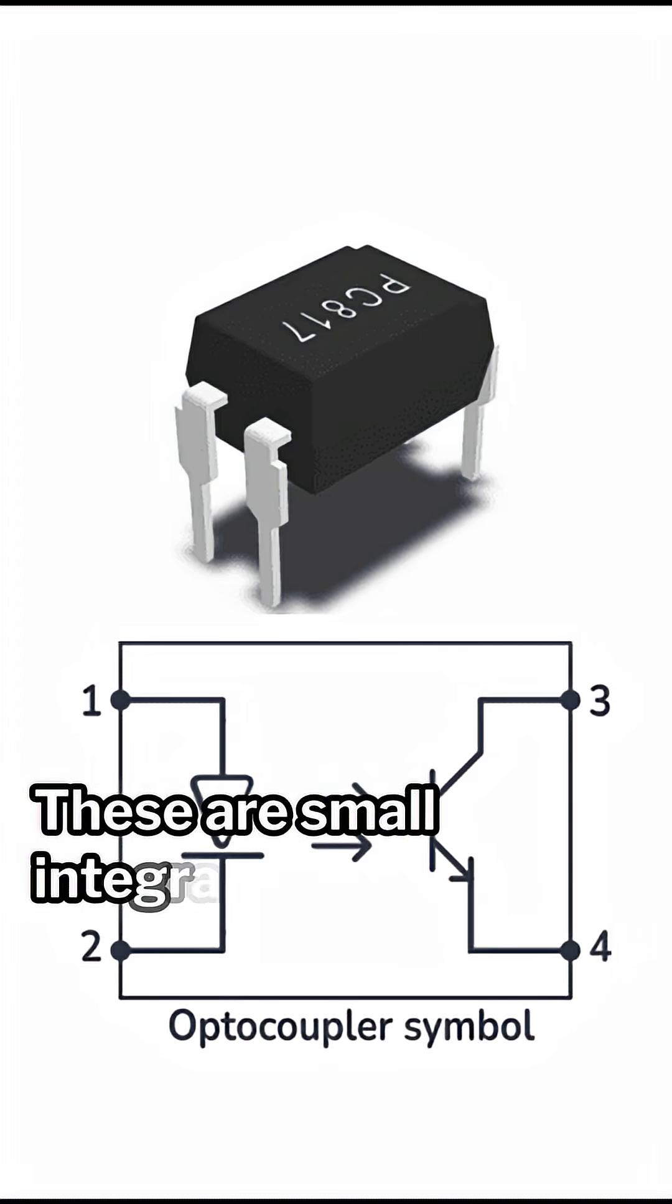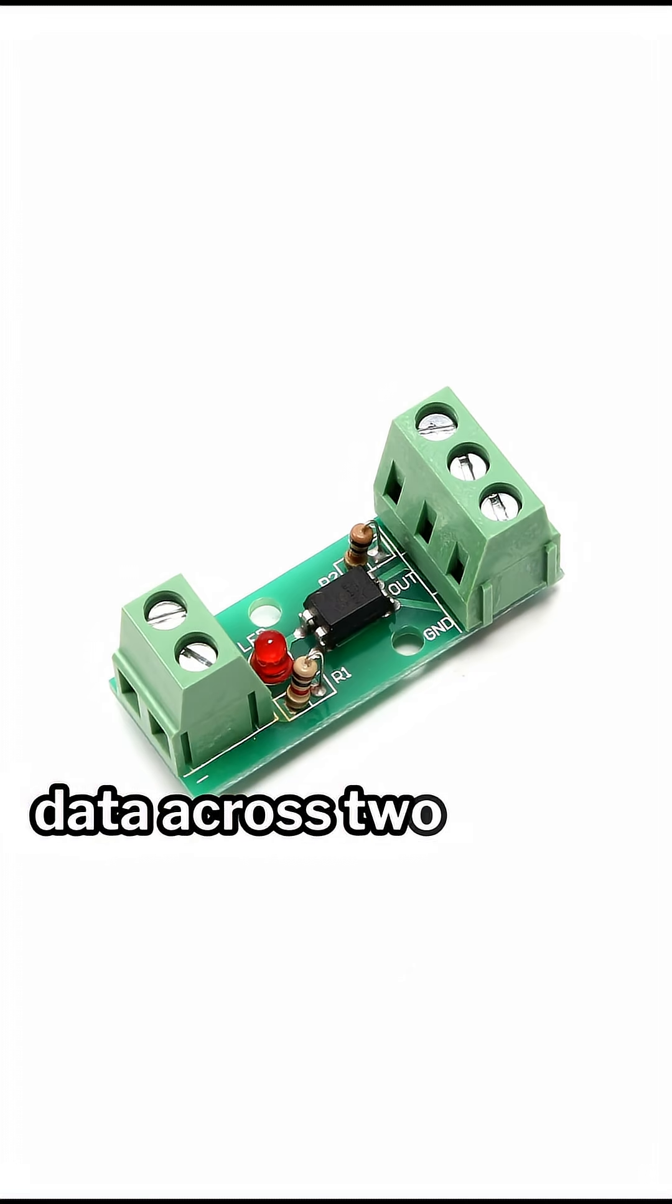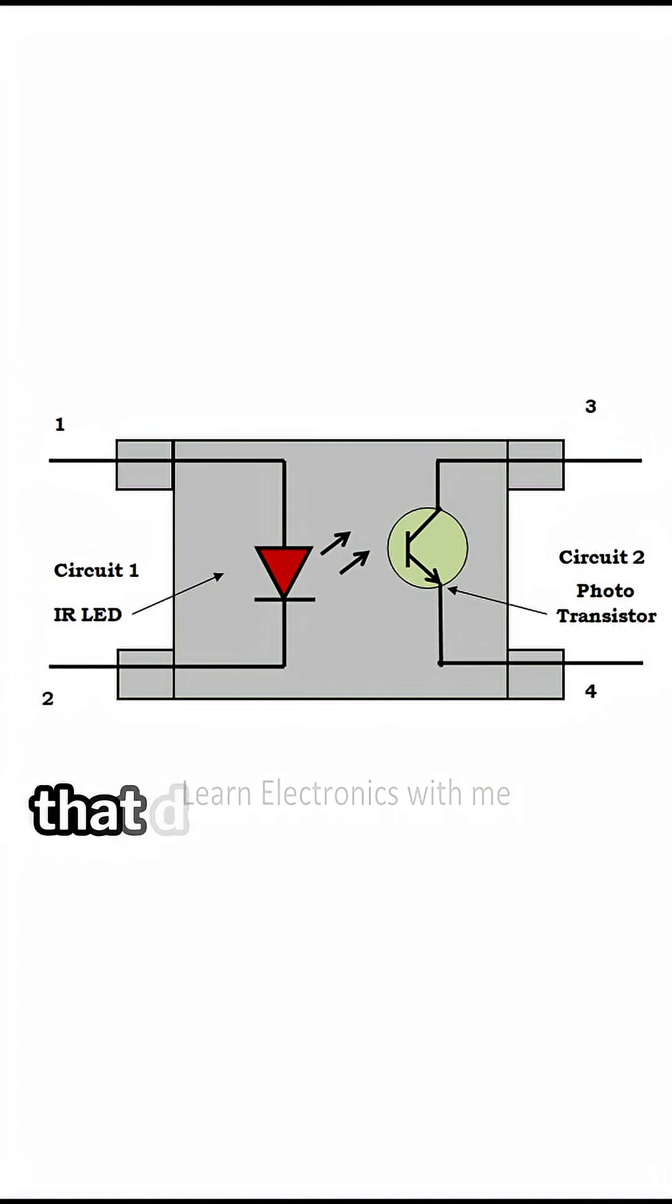Number five: optocouplers. These are small integrated circuits that communicate data across two isolated circuits with light. This allows you to isolate two devices that don't want a common ground.